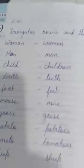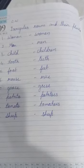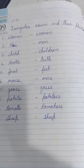Now, look here. This is a list of some more irregular nouns. Kindly note it down in your notebook.